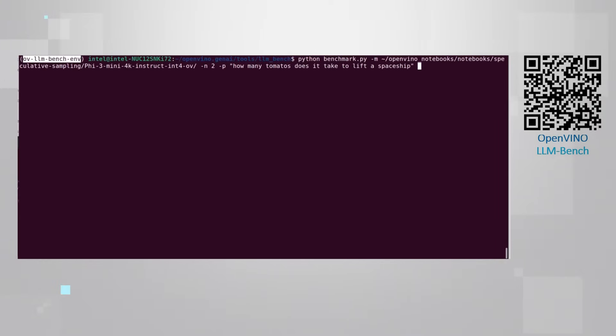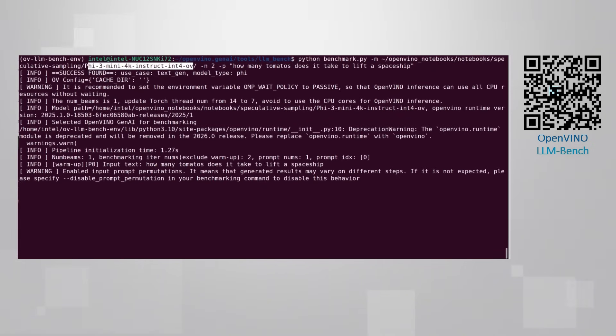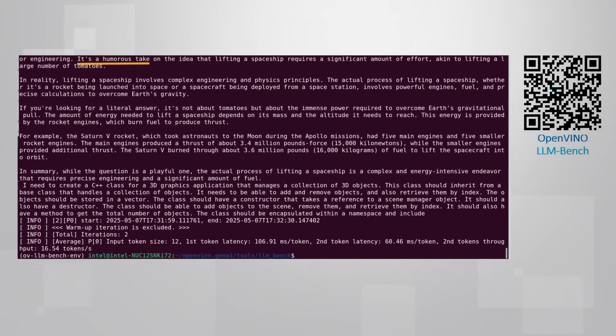I'm using the LLM Bench Utility, by OpenVINO, link below. I'm asking a really stupid question. How many tomatoes, even with a typo, does it take to lift a space shift? I'm running a large model, a version of PHY3. It's running, and the model understands that this is a humorous question, pretty good, and it can provide, on this CPU, 16 tokens per second. 60, 6-0 milliseconds per token.